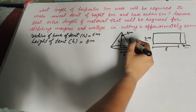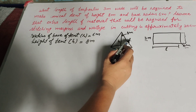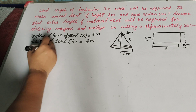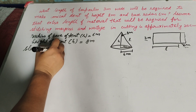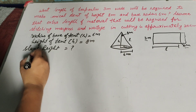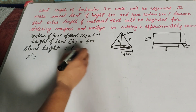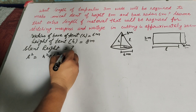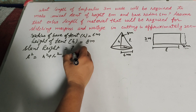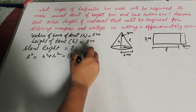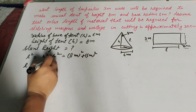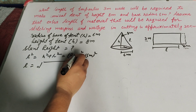First we find the slant height of the tent. Since height and radius are given, we find the slant height. The cone is a right circular based cone, so we use Pythagoras' theorem to find slant height: l squared equals h squared plus r squared. h is the height, it is 8 meter squared, plus r squared where r is the radius, it is 6 meter squared.